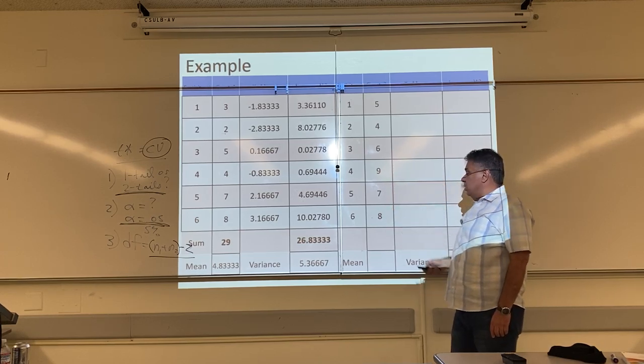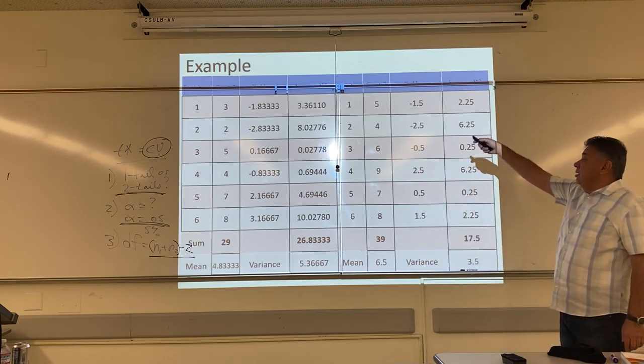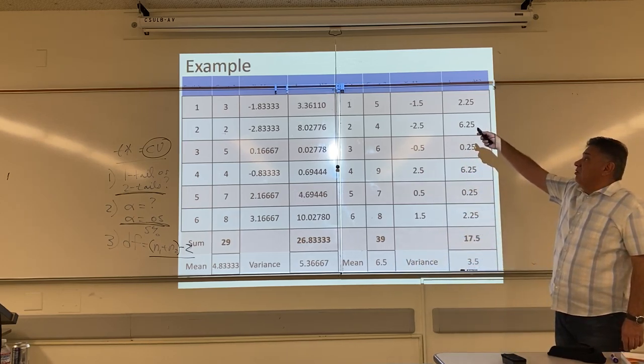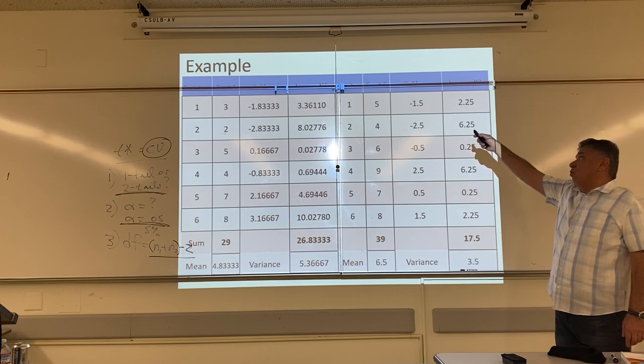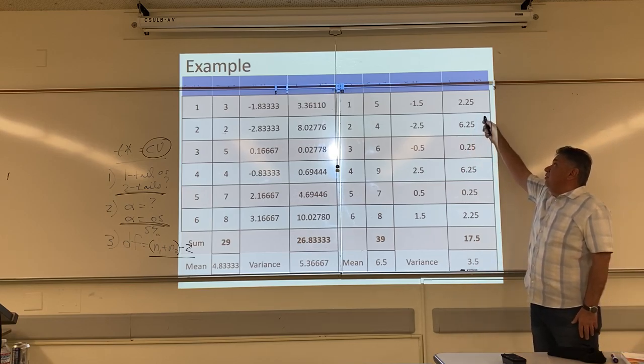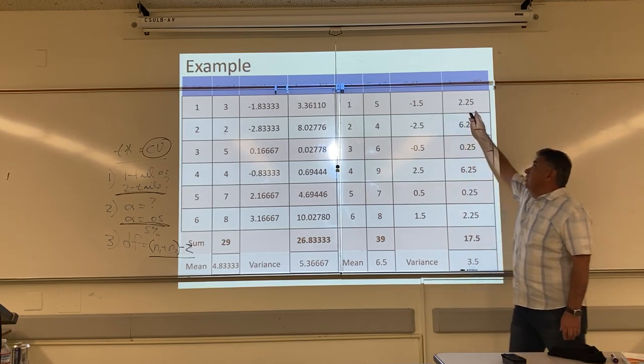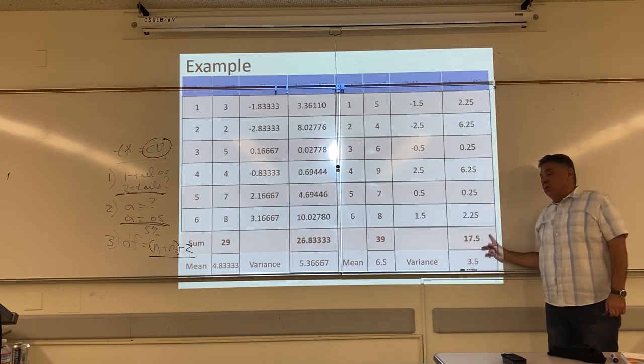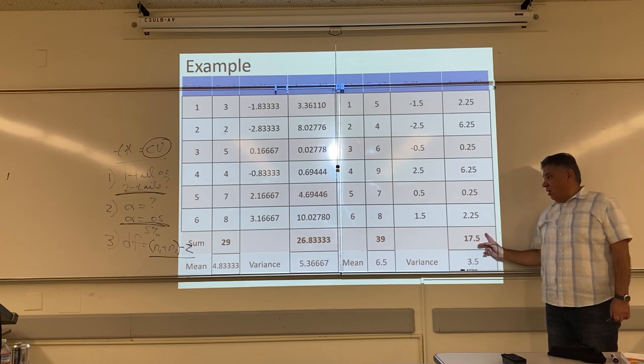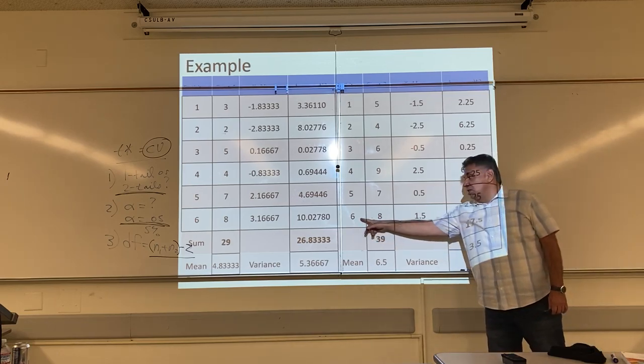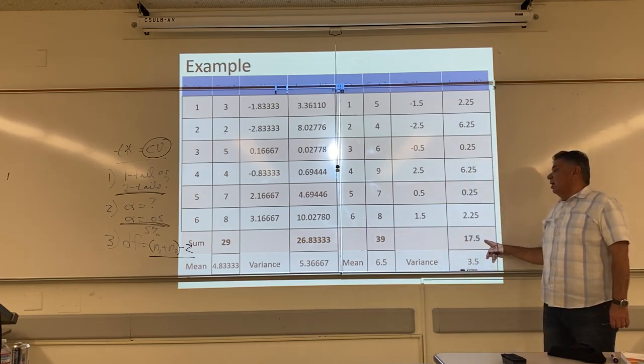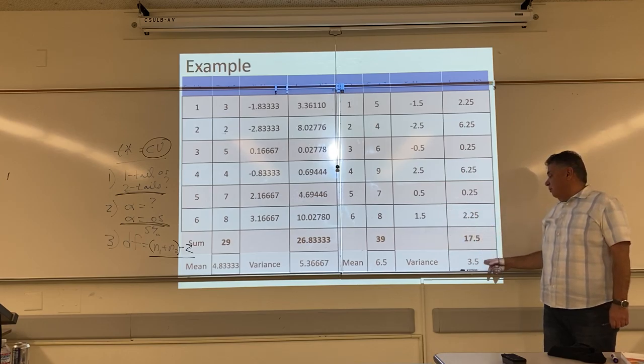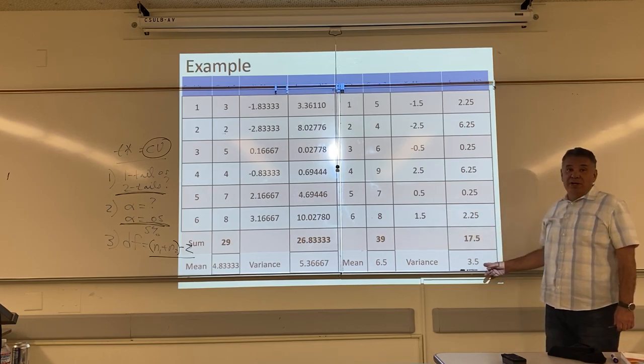Plus 8 is 39, divided by 6. 6.5 is the mean. 5 minus 6.5 is negative 1.5, negative 1.5 squared is 2.25. This is the difference. This is the difference squared. All of this work is to find the total, the sum of the squares, the sum of the differences squared, divided by my degrees of freedom, divided by 6 minus 1, divided by 5. Here's my variance, 3.5.